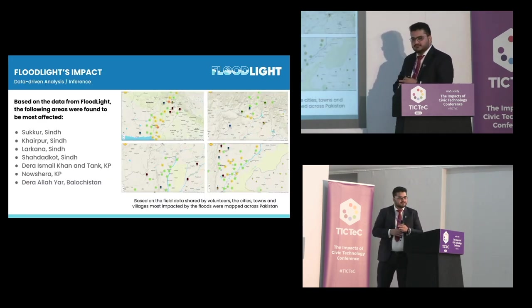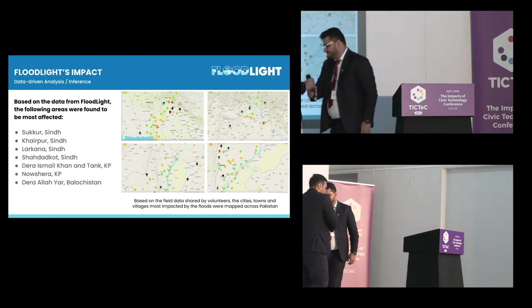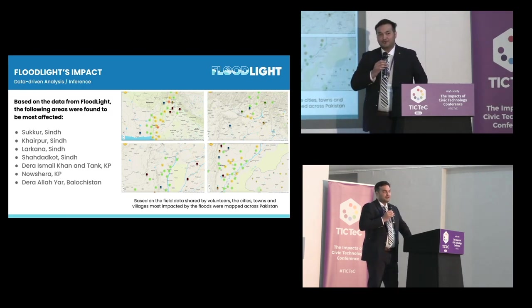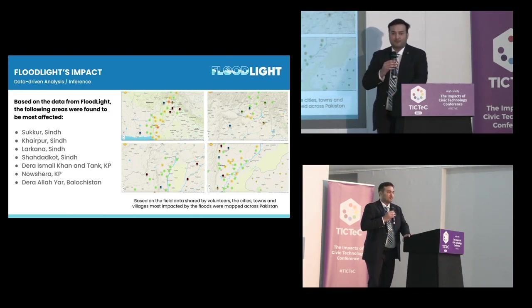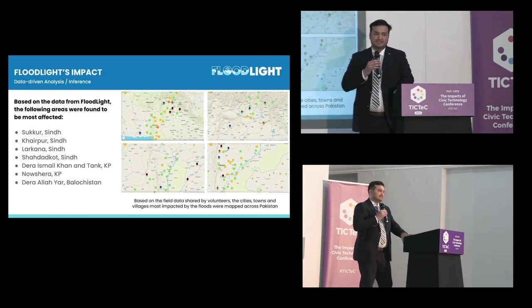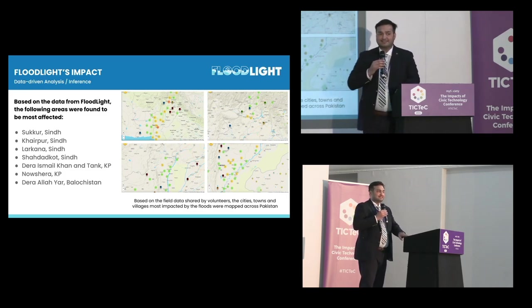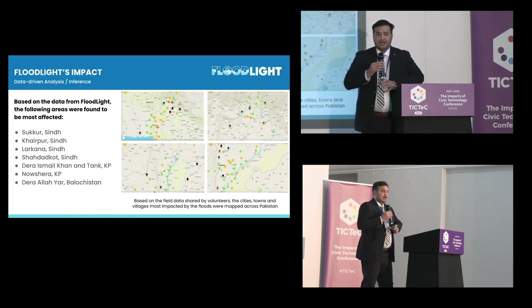Floodlight played a critical role in guiding numerous aid organizations to target their relief efforts effectively. By providing detailed insights through its datasets, it supported both immediate relief and future planning. Aid organizations were able to pinpoint the exact locations of districts, towns, and areas most severely impacted by floods, allowing them to focus their resources for effective disaster relief.